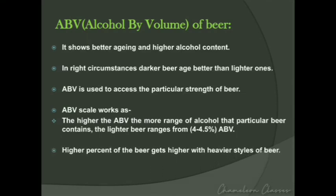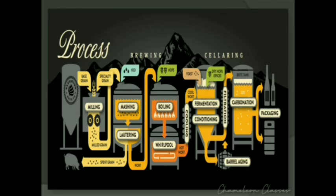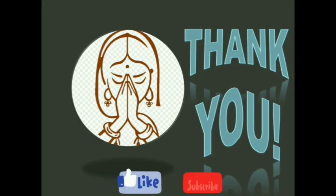Finally, the overview of the brewing process flowchart shows the entire process from the base grain to the packaging of beer, covering all the steps already discussed. That was a brief discussion about the processing of beer. Thank you all — please do like, share, and subscribe to Chameleon Classes.